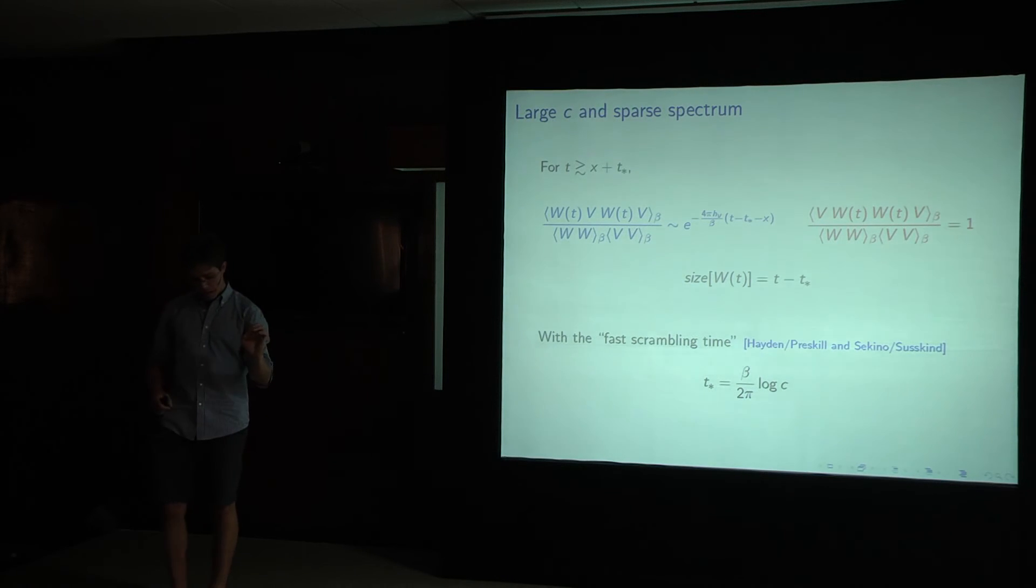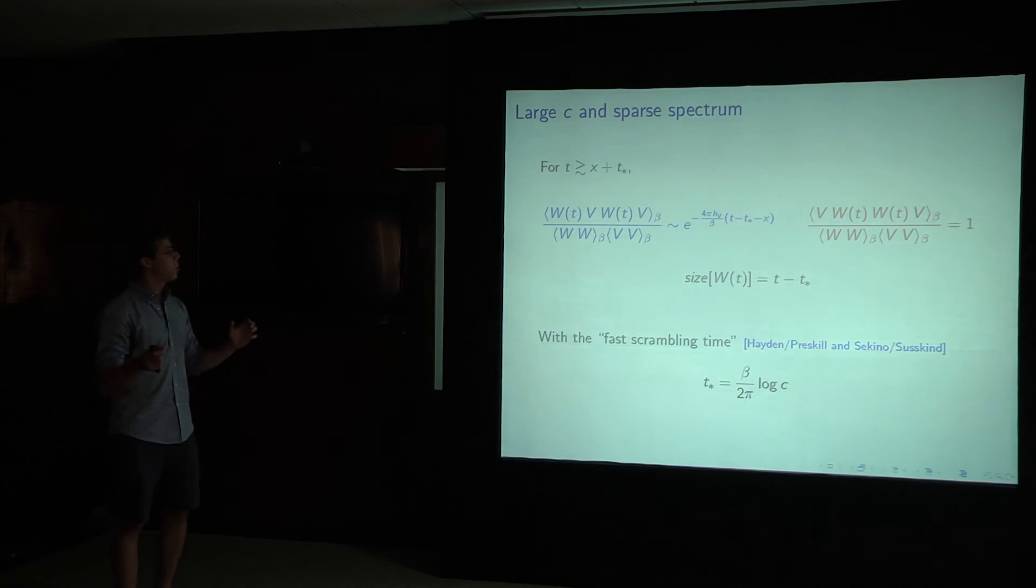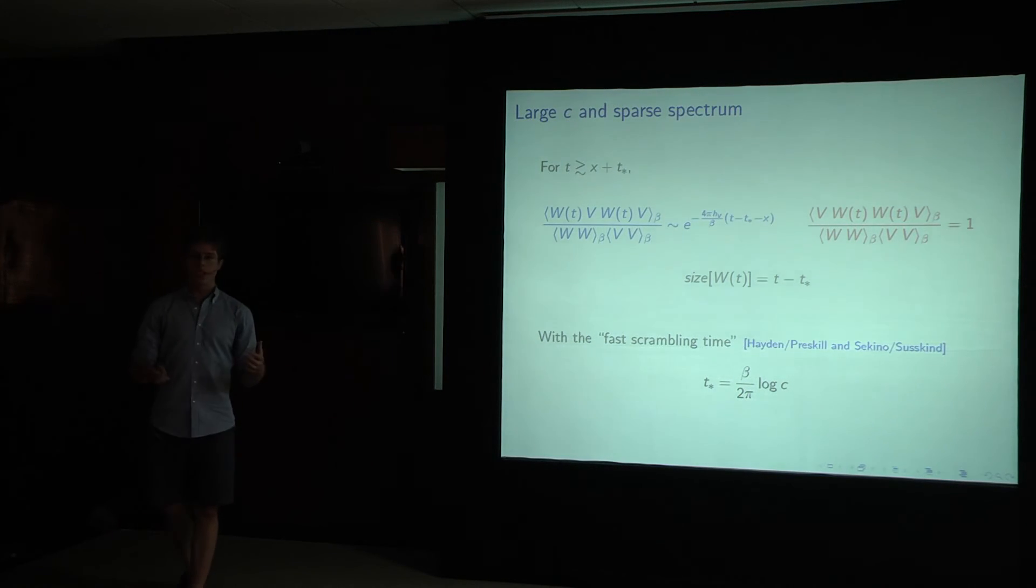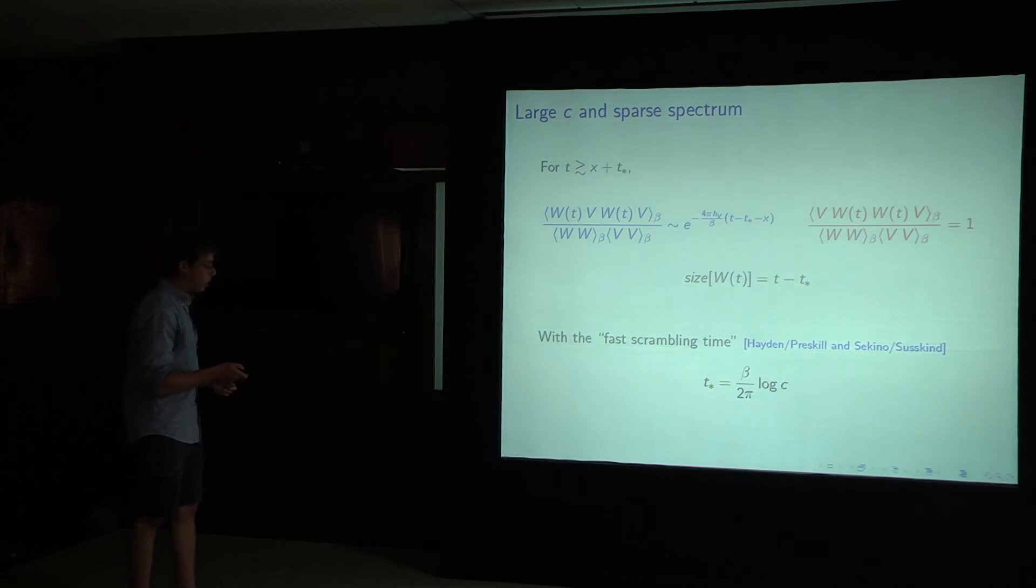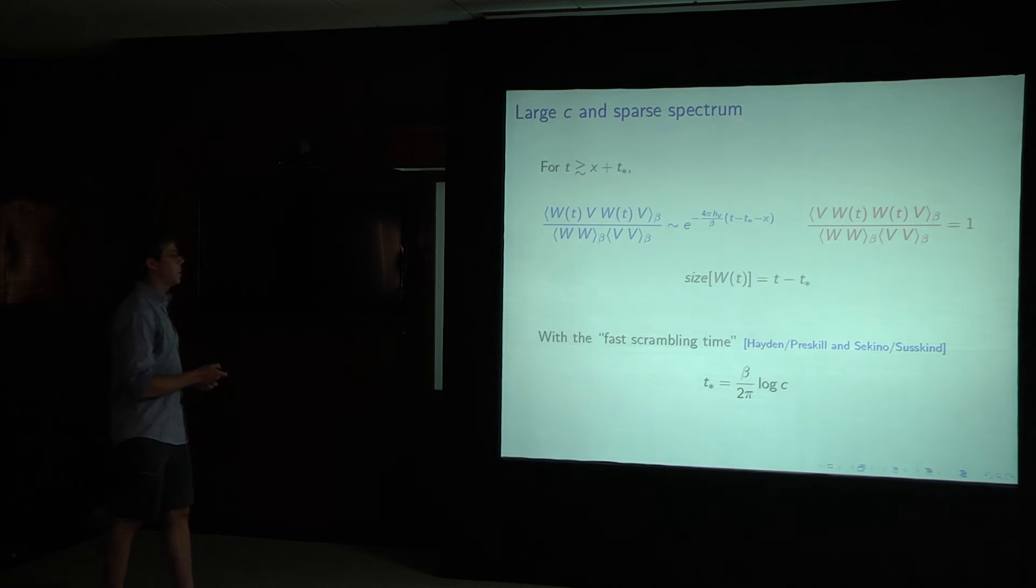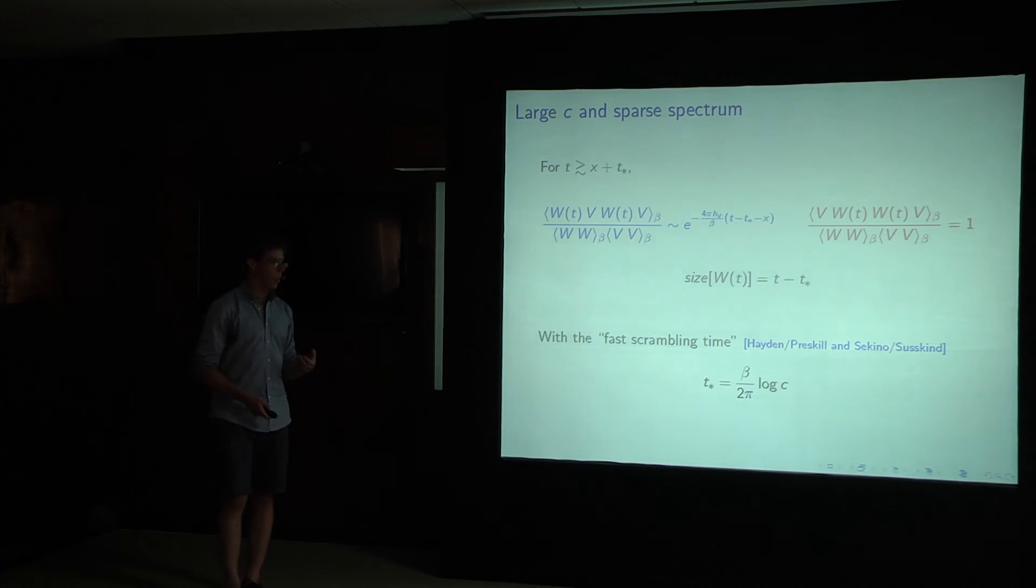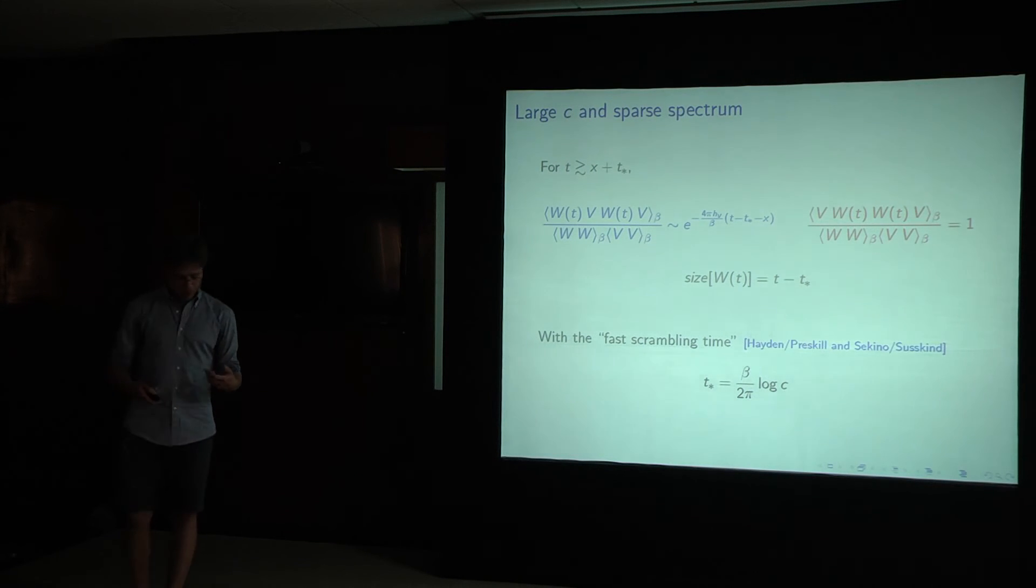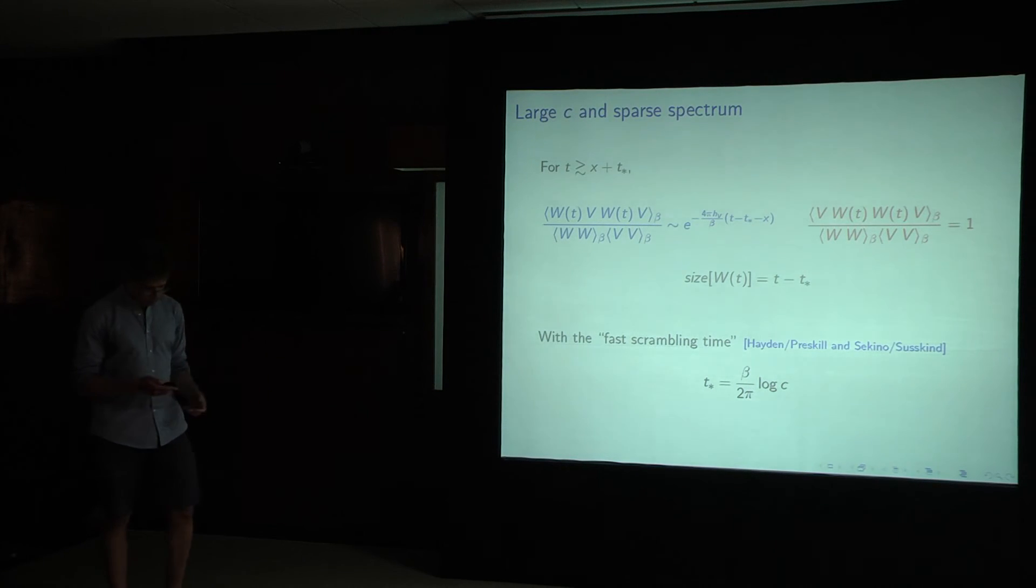Finally, I just want to point out that there's this delay related to the distance, and that's exactly what we expected. We make a perturbation here for w, and we let it grow outwards, and it has to, you have to wait a time related to the distance between w and v before the correlations can start to be affected and the correlator can start to decay. Finally, there's also a delay related t star, which is known as the fast scrambling time of Hayden, Preskill, Sekino, and Susskind. And I don't really have time to go into the details of that, but that's what this t star delay is.